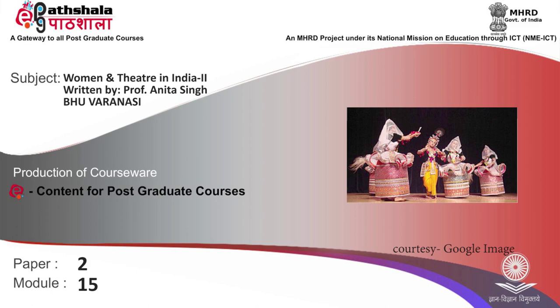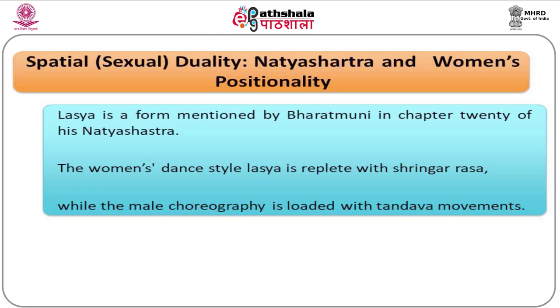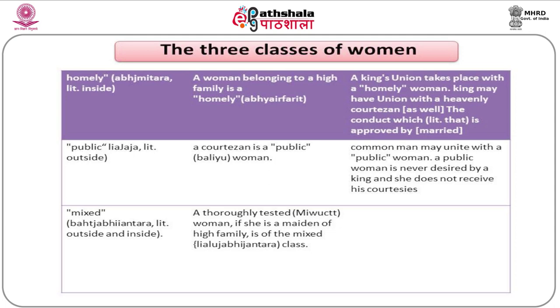There are three classes of women according to Natya Shastra: Homely, Public, and Mixed. A woman belonging to a high family is Homely (Abhigya Mitra); a king's union can take place with a homely woman, or with a heavenly courtesan through approved marriage. A courtesan is Public (Leah Jaja); common men may unite with a public woman, but she is never desired by a king. A thoroughly tested woman of high family is of Mixed class.